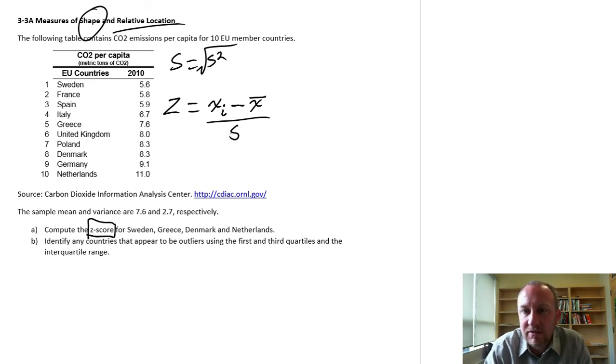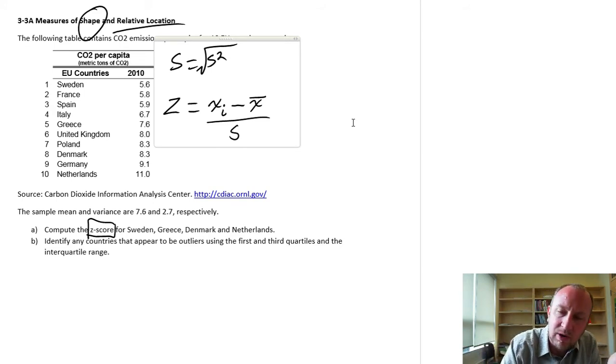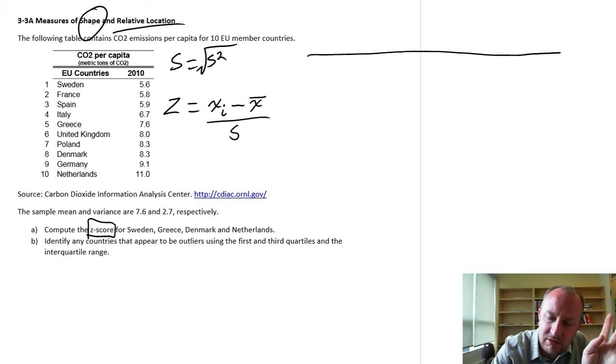This notion of relative location becomes extremely important later on as we get into more complex concepts such as hypothesis testing. So what I want you to keep in mind, when we start talking about these z-scores, what we're doing is almost transcribing one data set to another. I want you to imagine that we're working with two distributions simultaneously.